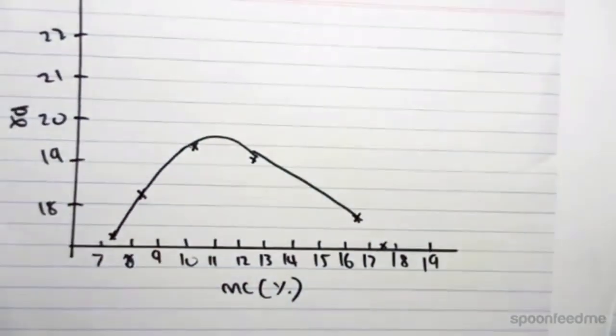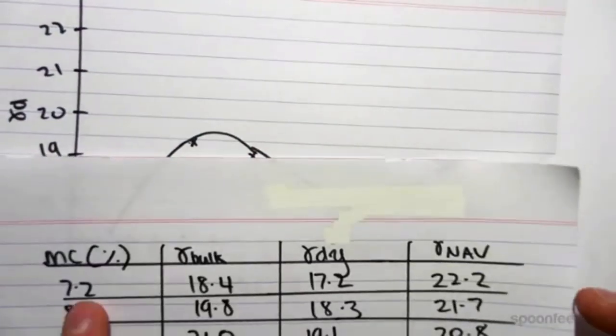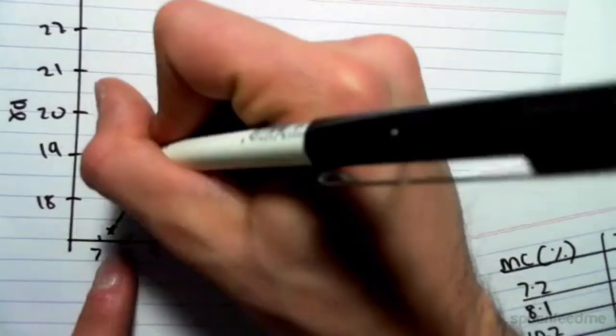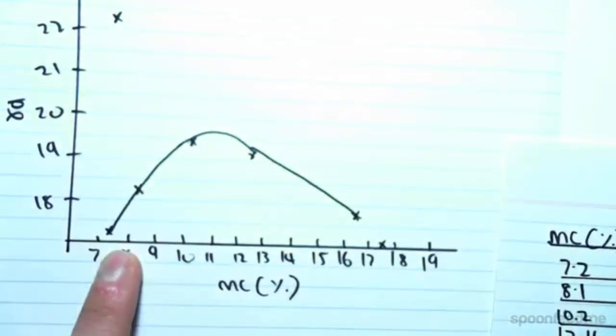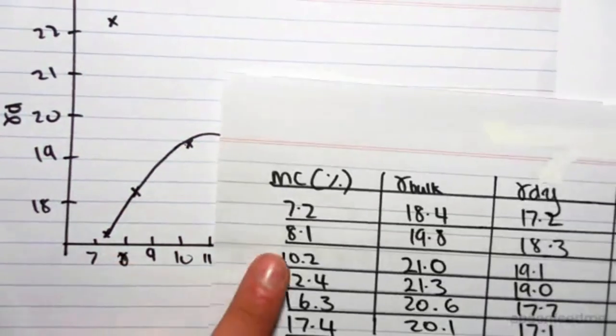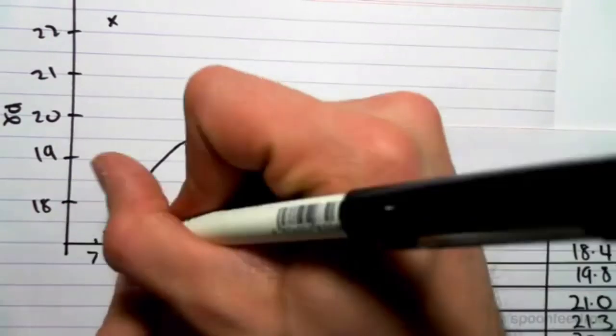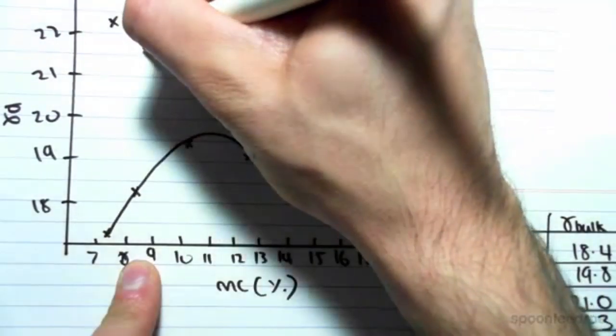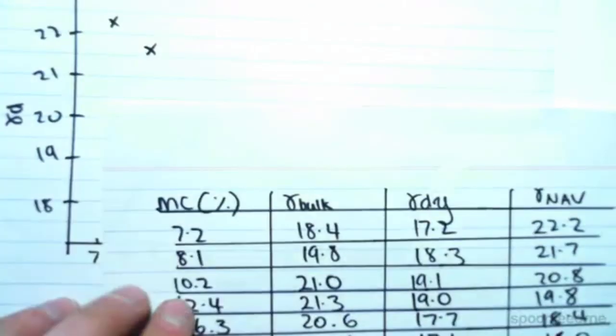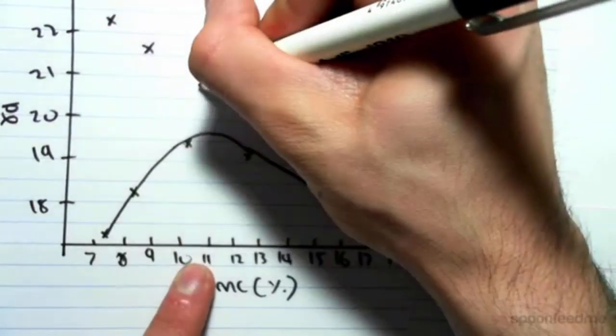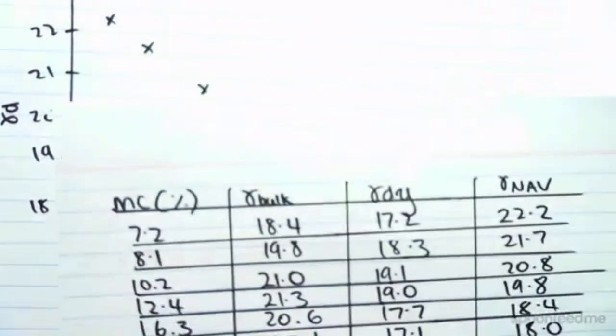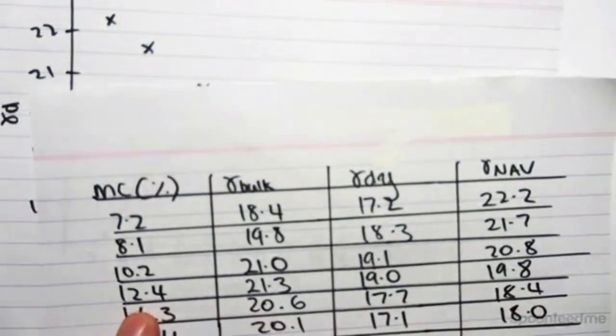I can also go ahead and plot the no air voids line. So 7.2 and 22.2. So this is up here. I'm just going to plot in the points. 8.1, 21.7. 8.1, 21.7. 8.1, 21.7. 10.2, 20.8. 10.2, 20.8. 10.2, 20.8. 12.4 and 19.8. 12.4, 19.8.